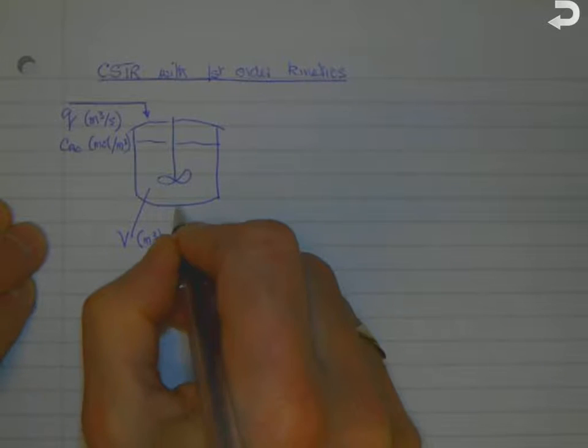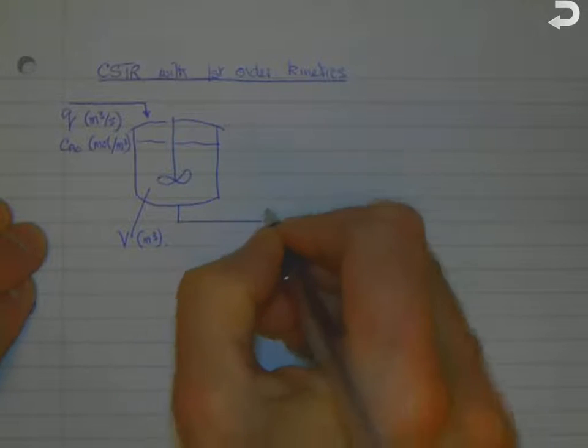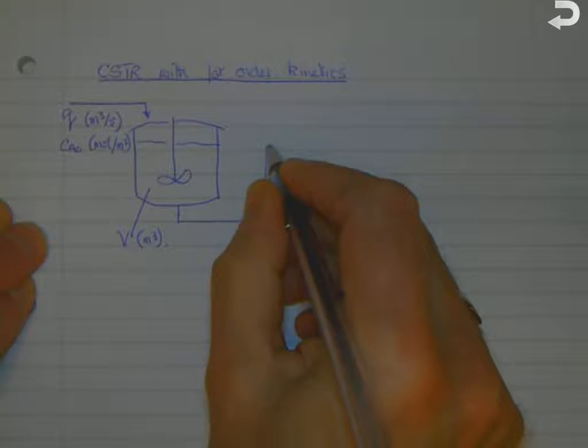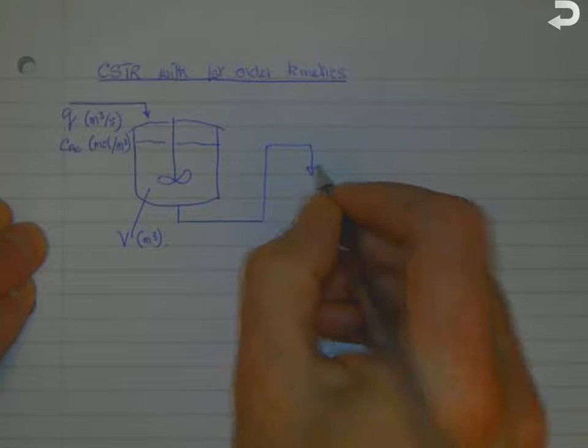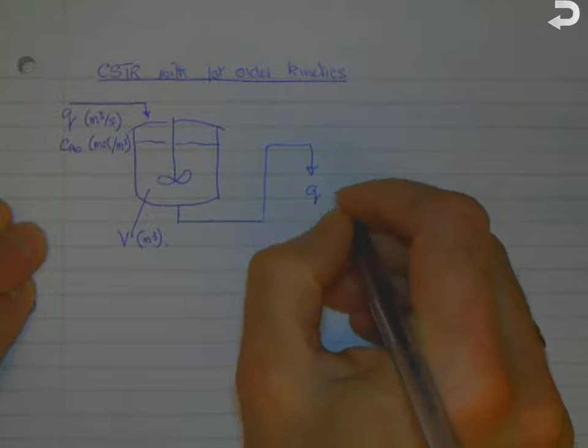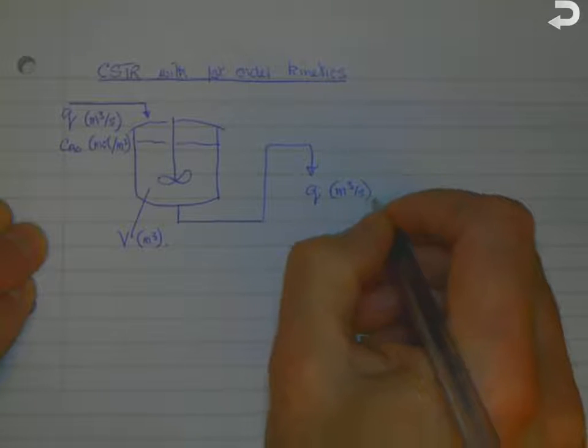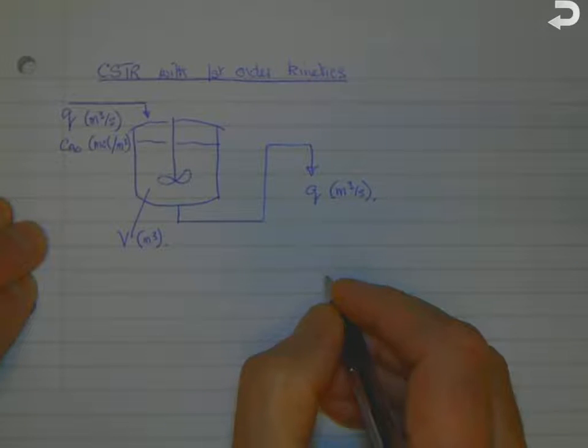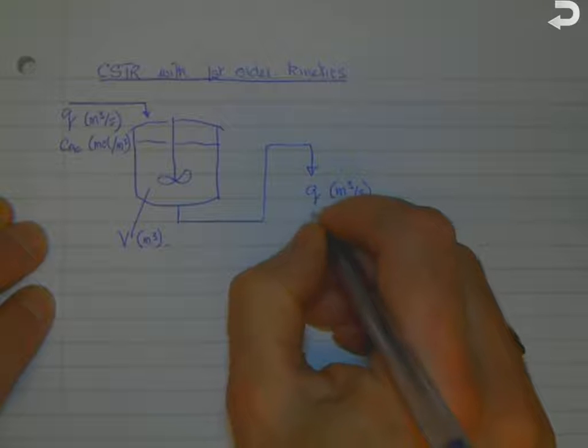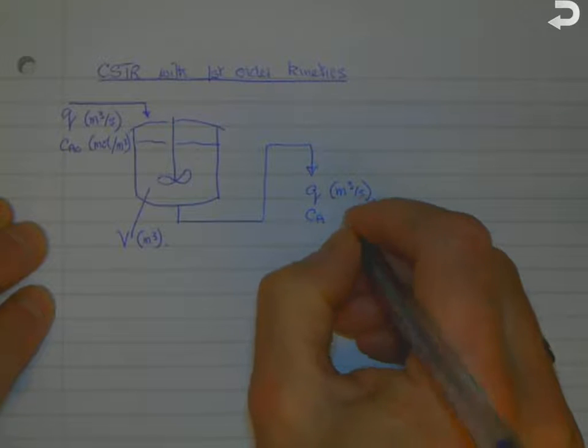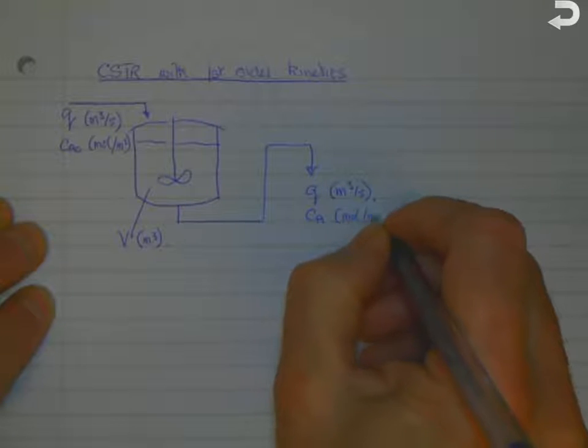The reactor has a volume V in cubic meters and an outlet flow Q in meters cubed per second. The outlet flow is the same as the inlet flow because we're assuming a constant density system.